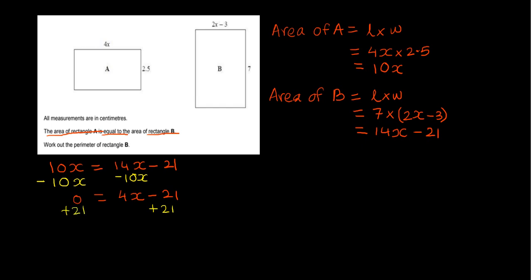And I end up with 0 over here, and on the right hand side I have 4x minus 21. So I need to get rid of the 21 on the right hand side. I've got 4x equals 21, and then I divide both sides by 4.